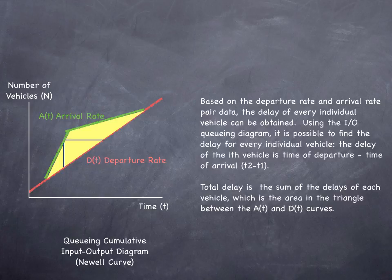Total delay is the sum of delays of each vehicle, which is the area in the triangle between the A of T and D of T curves.